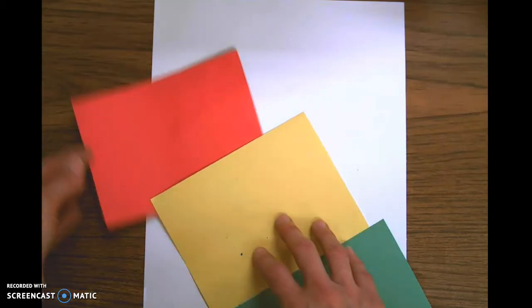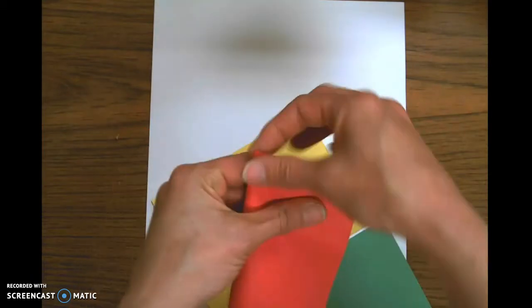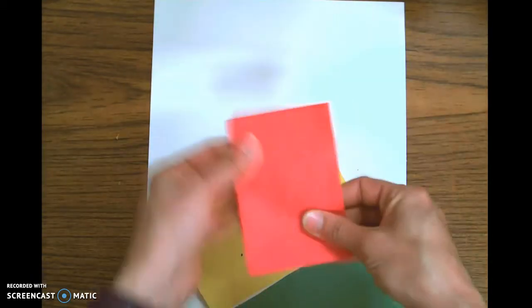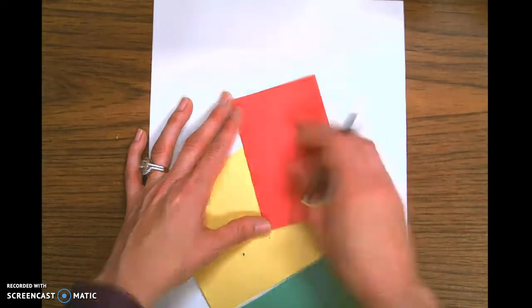So to start off, I'm going to take my piece of paper and I'm going to fold it in half. And if I want to, I can draw a shape with my pencil or I can just go ahead and cut it.